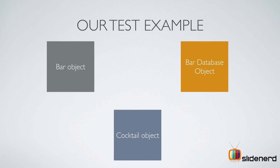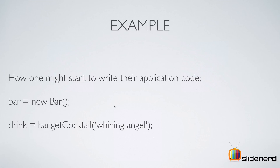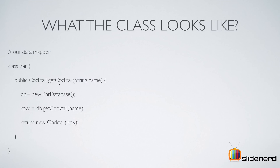Let's take our example, which is going to have three objects: a Bar object, a BarDatabase object, and a Cocktail object. This is an app for making or serving drinks online. You need a Bar object — you say bar equals new Bar, and simply call bar.getCocktail, supply the name of the cocktail, and you get the drink. As a newbie programmer, my getCocktail method takes a string argument, constructs the BarDatabase object inside it, uses that database object to call getCocktail, passes the name, gets a cursor, and creates a Cocktail object to return.